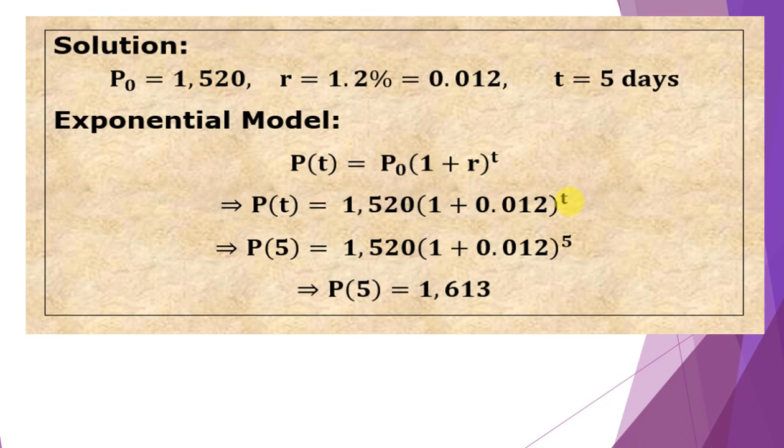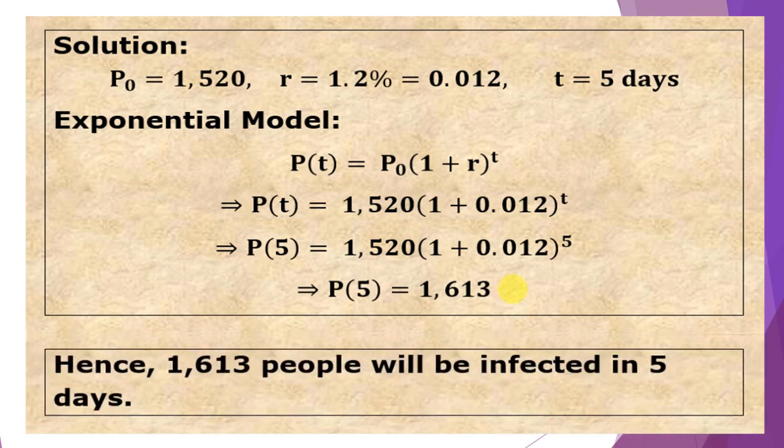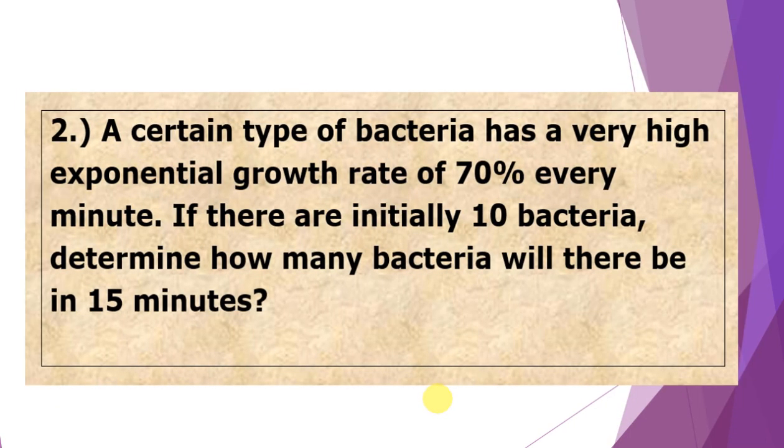And solving, P(5) = 1,613 people. Hence, there will be 1,613 people infected in 5 days.